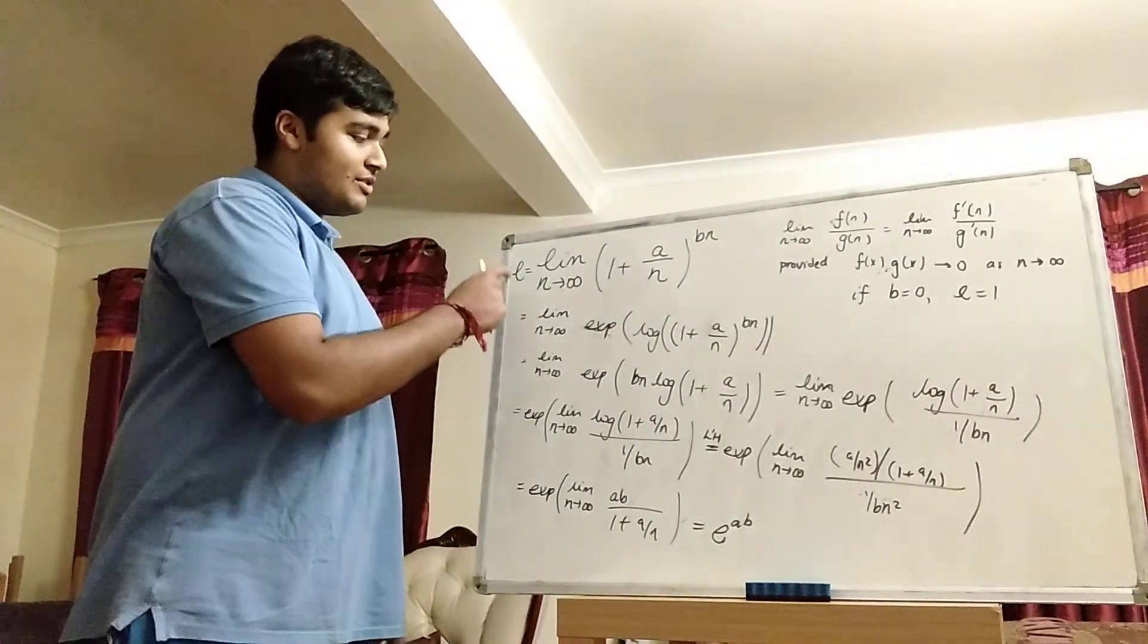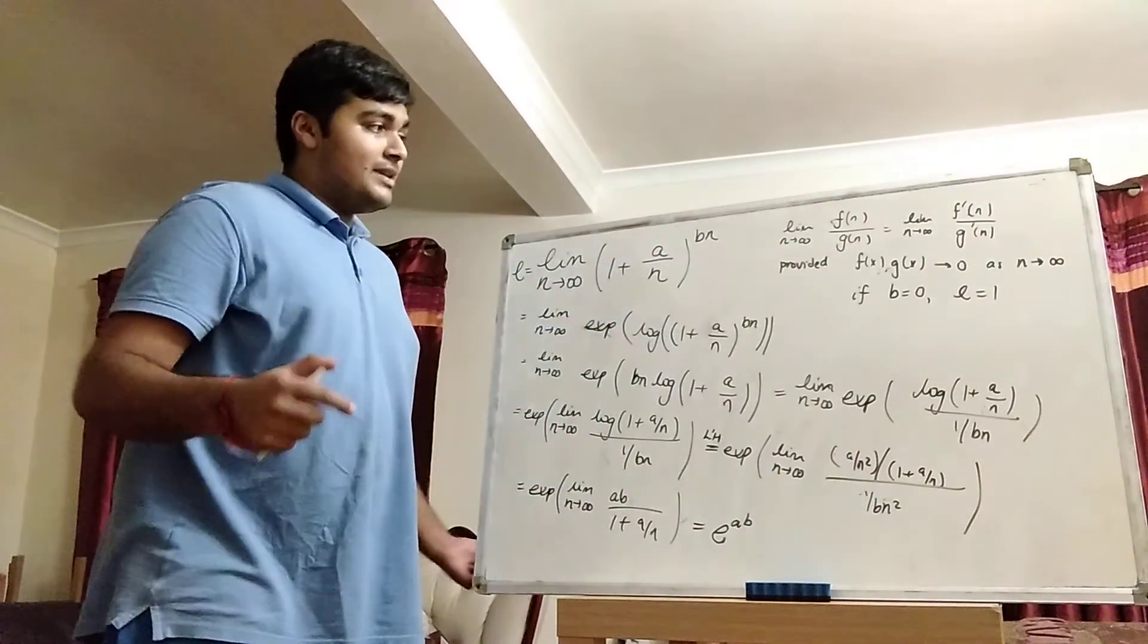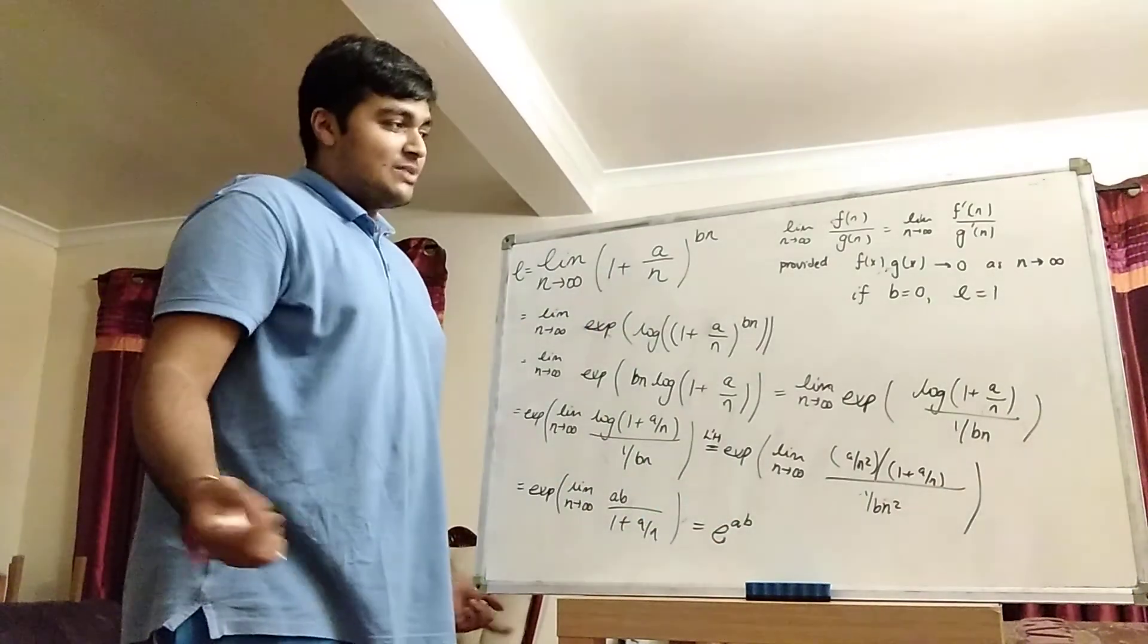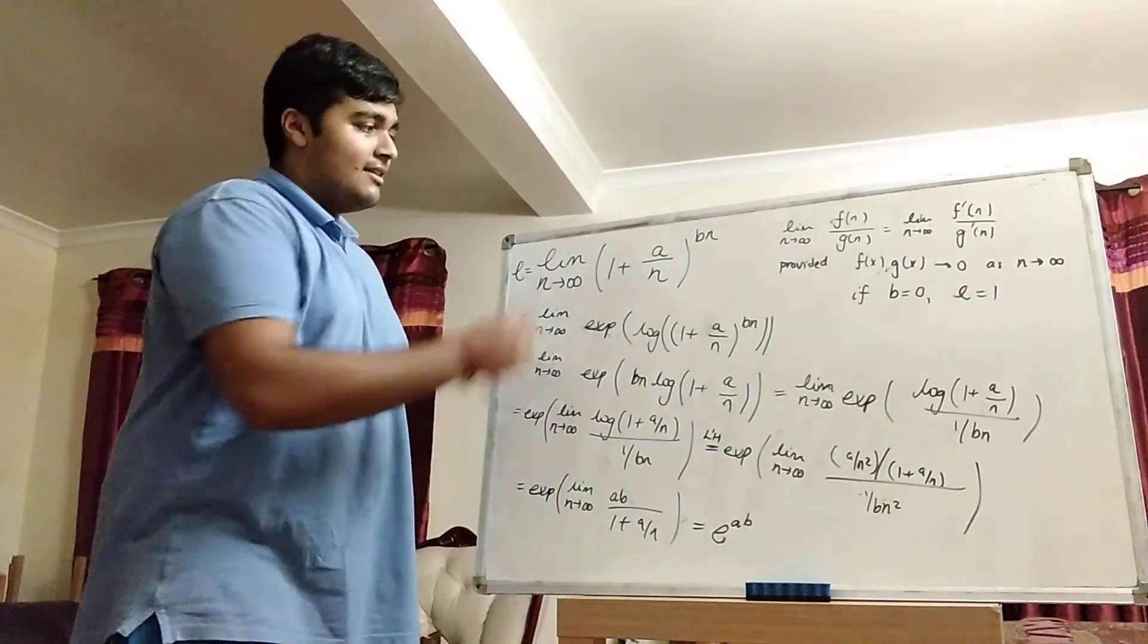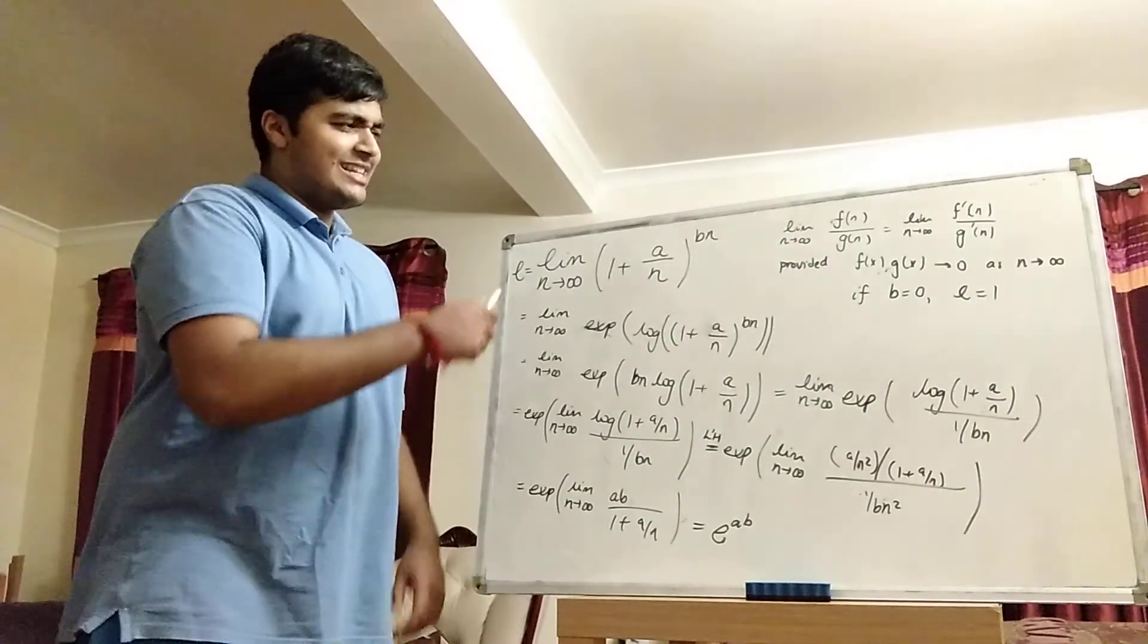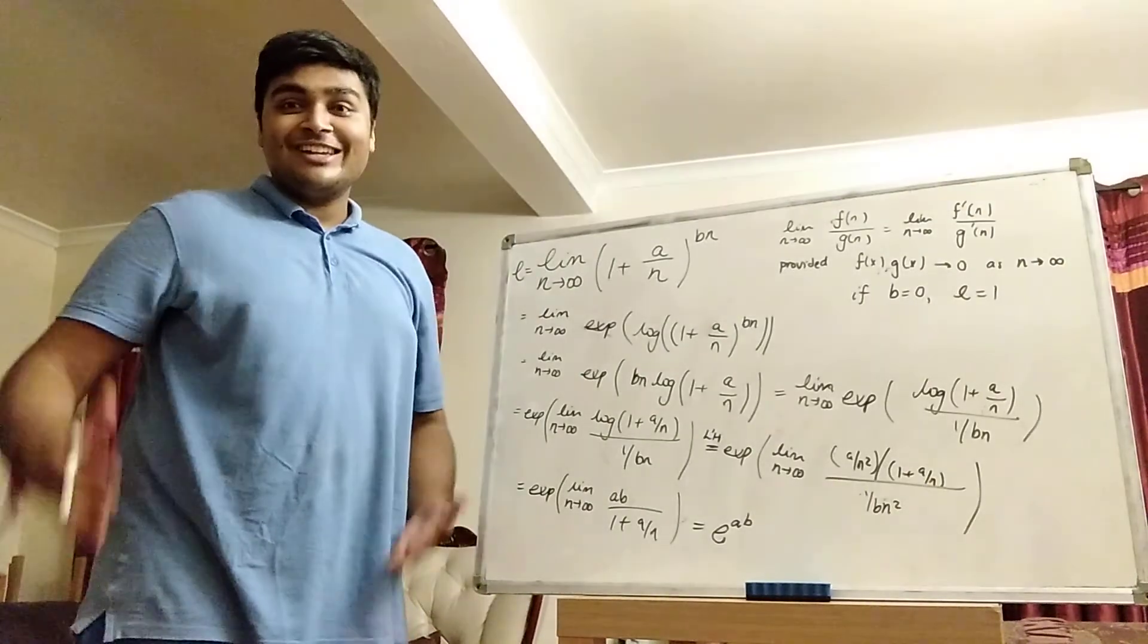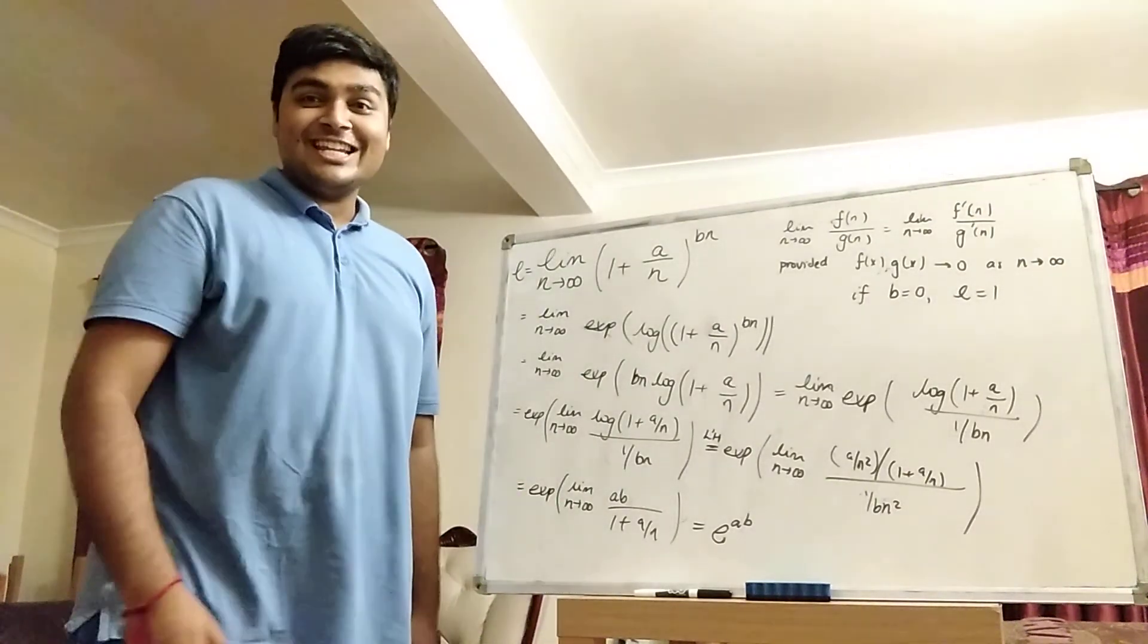And that's the problem done. We've found that the limit as n goes to infinity of this expression here is e to the ab when b is non-zero. But in particular, we can also note, well, when b is zero, e to the ab is e to the zero, which is 1. So in fact, e to the ab is always the limit as n goes to infinity of this thing here. Yeah, so just a little short video on this limit here. Quite important and quite useful to solving a lot of limit problems. I hope you've enjoyed the video. If you have, please do like and subscribe if you haven't already. Cheers. Have a great day.